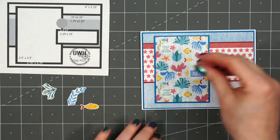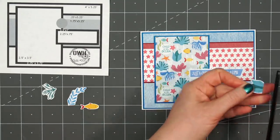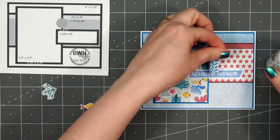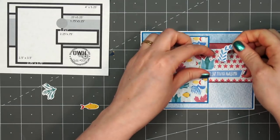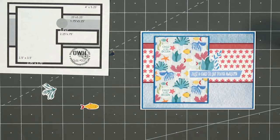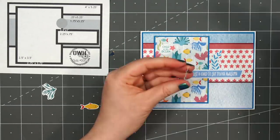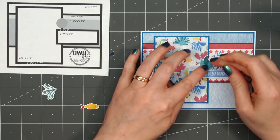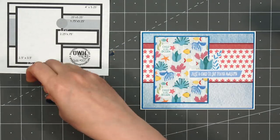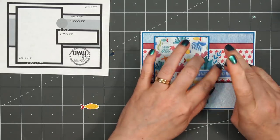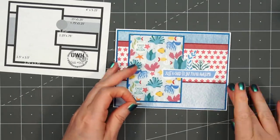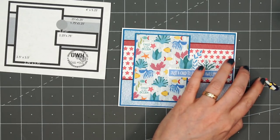I'll also be adding several of the cut-aparts. I have a few of the plants and this sweet little yellow and red fish. I'll tuck the plants behind the sentiment. I am trimming the very bottom so it's straight and then I'll just glue them in place. I decided to pop up the little fish so I have some thin foam squares on the back. I'll remove the release paper and adhere it in front of all of those little plants and right above the sentiment.